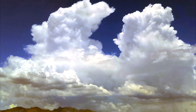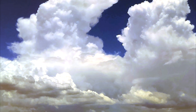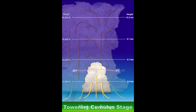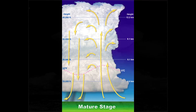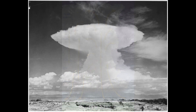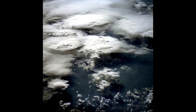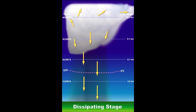Large clouds begin to form over the desert. This happens in the afternoon once the daytime temperatures near their peak. As the clouds grow, they can form cumulonimbus incus, or anvil head clouds. Some reach up to 12,000 meters and can even be seen from space. These clouds can form into thunderstorms with the potential for intense rain and lightning.